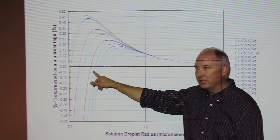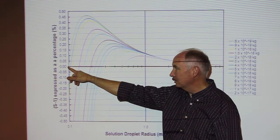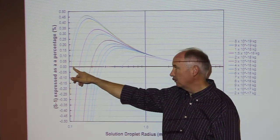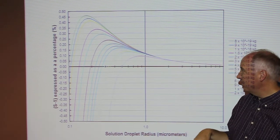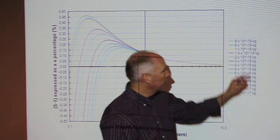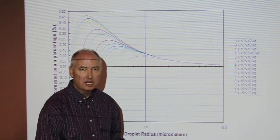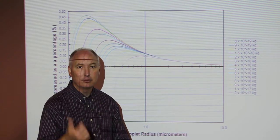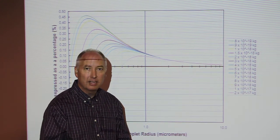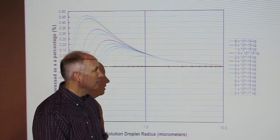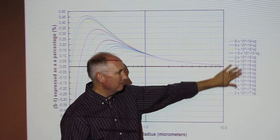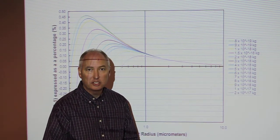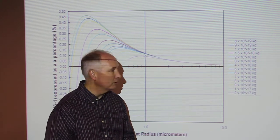This is the equilibrium saturation vapor pressure over a plain surface of pure water. We have several different particles, and each particle has its own Kohler curve because it has a different mass, a different van't Hoff factor, and a different molecular weight. Here we have several different masses of the exact same chemical composition — in this case, ammonium sulfate.